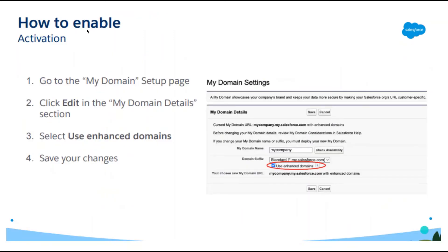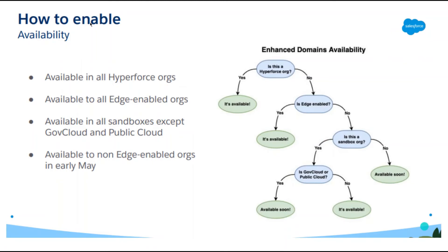How to enable enhanced domains: go to My Domain setup, click the My Domain Details section, select 'Enhanced Domain,' select 'Use enhanced domain,' and save your changes. That's how you enable enhanced domains.